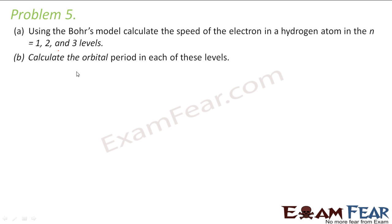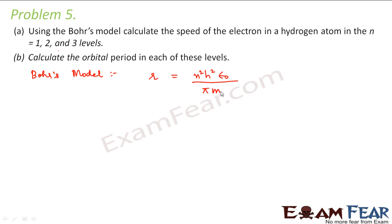So now let us see, according to Bohr's model, the Bohr radius is given as n² h² ε₀ divided by π m e². And the velocity of an electron is given as e divided by the square root of 4π ε₀ r m.